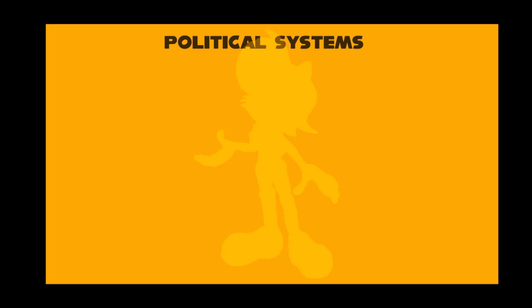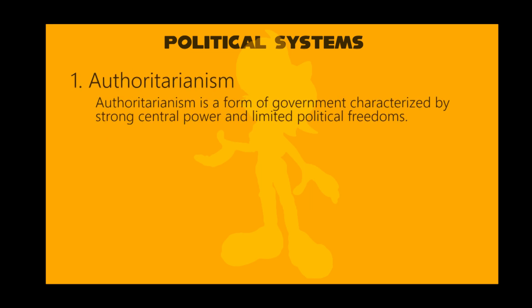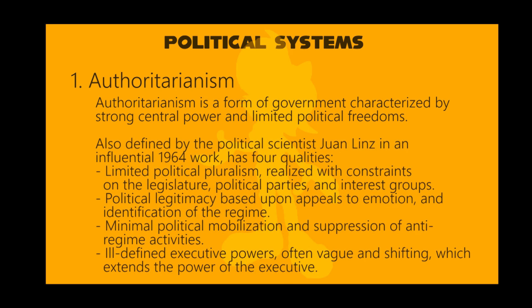The first one is called authoritarianism. Authoritarianism is a form of government characterized by strong central power and limited political freedoms. Political scientists have created many typologies describing variations of authoritarian forms of government. In an influential 1964 work, the political scientist Juan Linz defined authoritarianism as possessing four qualities.